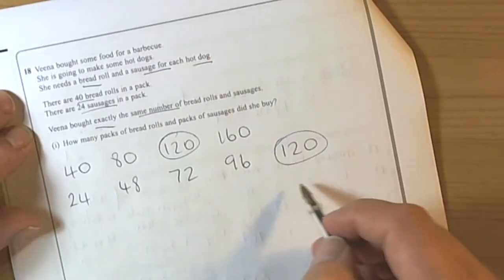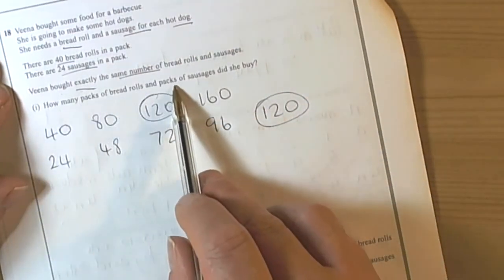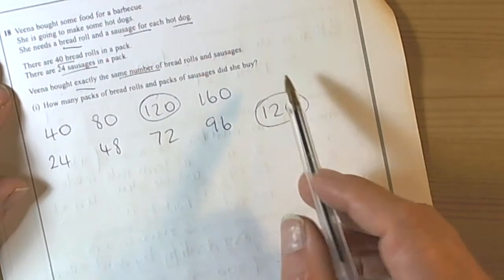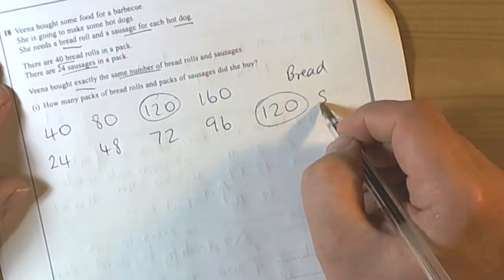Well we can see now that 120 appears in both. So when it says how many packs of bread rolls and how many packs of sausages did she buy, well this was for the bread and this was for the sausage.